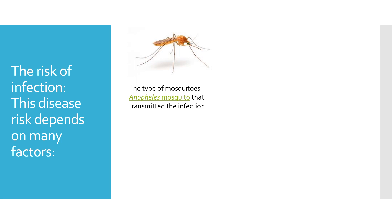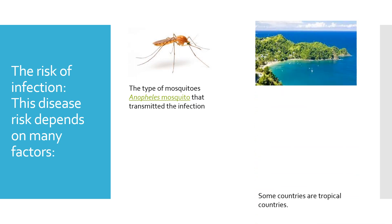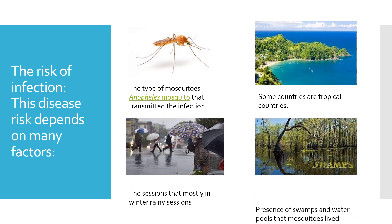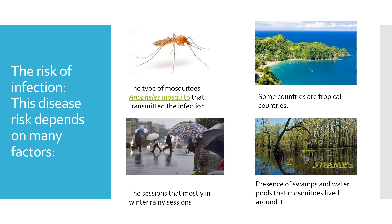The risk of infection depends on many factors. First, the type of mosquito — the Anopheles mosquito — transmits the infection. Tropical countries with more standing water tend to have more mosquitoes. Seasons also matter: during rainy and winter seasons, the disease may occur more frequently.